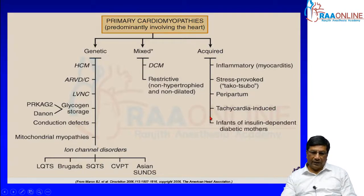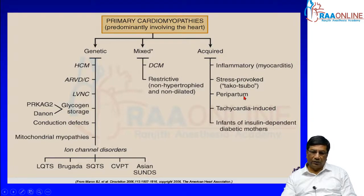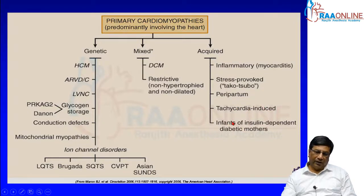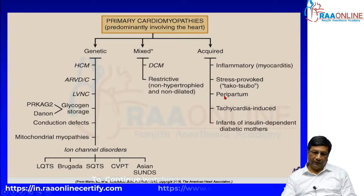Acquired cardiomyopathies include the classical post-viral myocarditis, called inflammatory myocarditis and cardiomyopathy. We also have Takotsubo cardiomyopathy, which is stress-provoked, peripartum cardiomyopathy, tachycardia-induced cardiomyopathy from long-standing arrhythmia, and babies of insulin-dependent mothers may have hypertrophic cardiomyopathy.